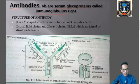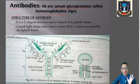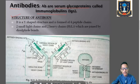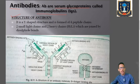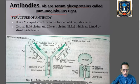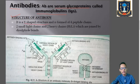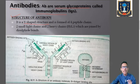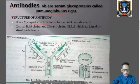Now we will discuss the structure of the antibody molecule. From your textbook, kindly refer to figure number 8.11 to see the structure. The antibody molecule looks like a Y-shaped structure and is composed of four peptide chains — first, second, third, and fourth.